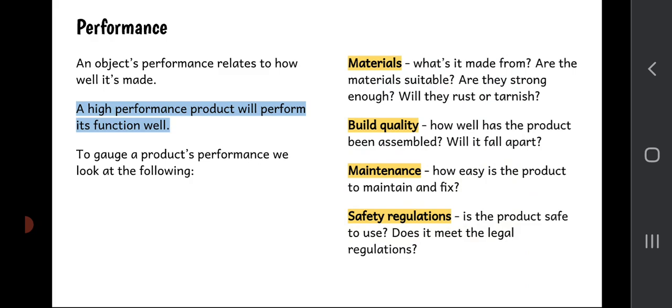So materials. Try and keep that mountain bike in your minds when we talk about this. What is a product made from? Are the materials suitable? Are they strong enough? Are they going to rust? Are they going to tarnish? Will they take paint well? All these things. So when we're making a high performance product, we have to choose materials very carefully.